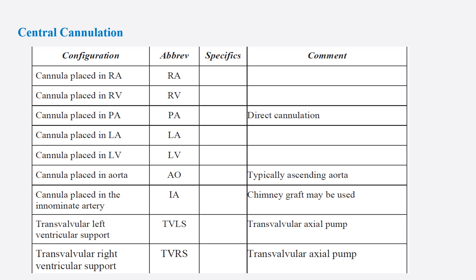For central cannulation, the cannula may be present in the right atrium, right ventricle, or sometimes in the pulmonary artery. On the left side, the cannula may be present in the left atrium, left ventricle, or in the aorta. A chimney graft may be used as a replacement in the innominate artery, and transapical left ventricular support can be provided via a transapical axial pump.